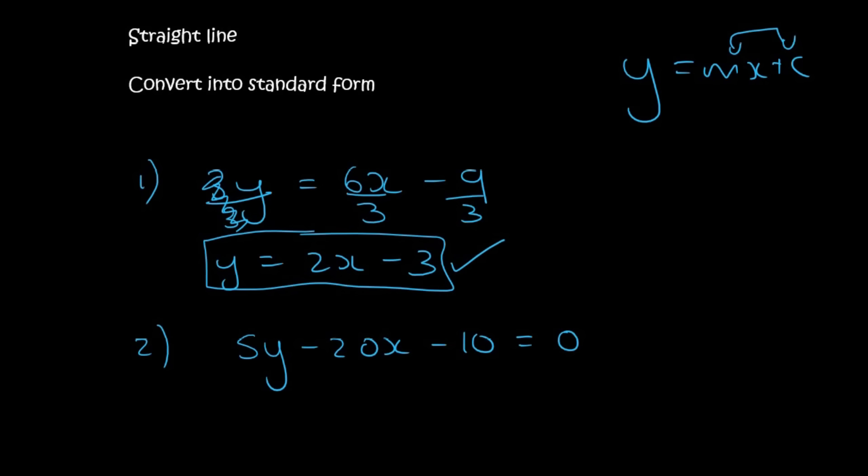Here, we need to take this and this away, because 5y needs to be alone. So it's going to be, when that 20x moves over, it will become positive. And when that 10 moves over, it also becomes positive. Now we need to divide everything by 5. And so that will be y equals to 4x plus 2. That is called standard form.